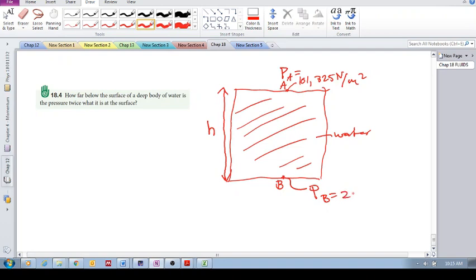So it'll be 202,650 Newtons per meter squared. So we know that at this depth the pressure is twice that, but we've got to find out what is this depth.